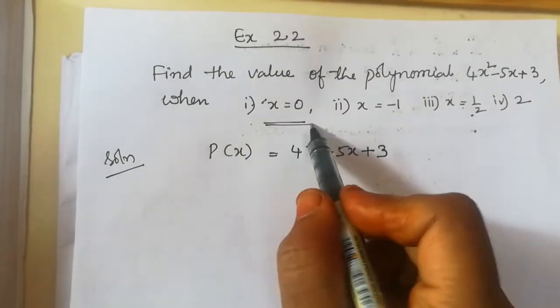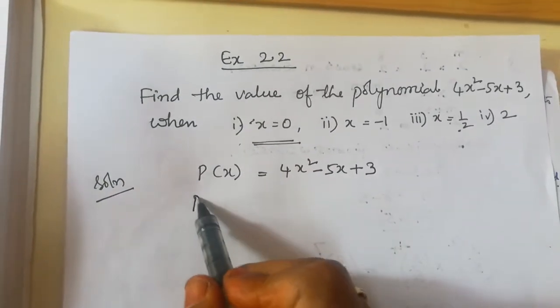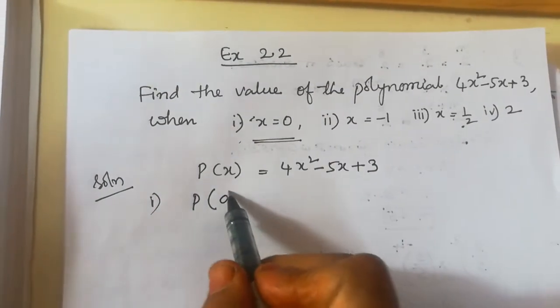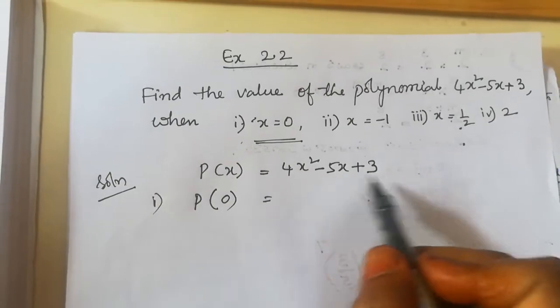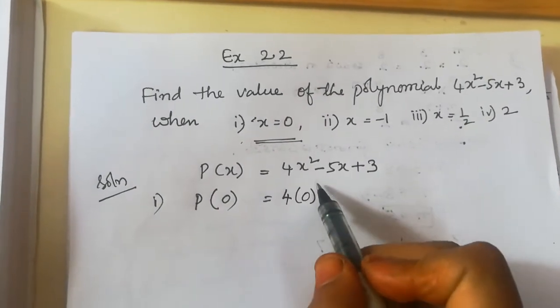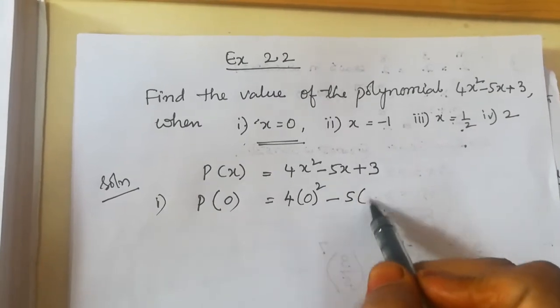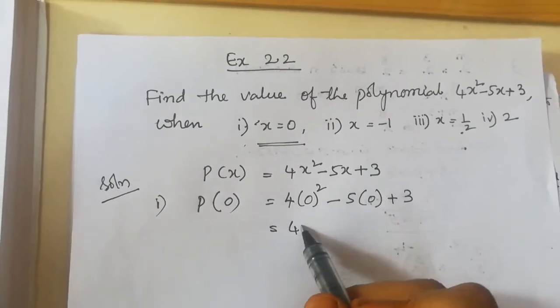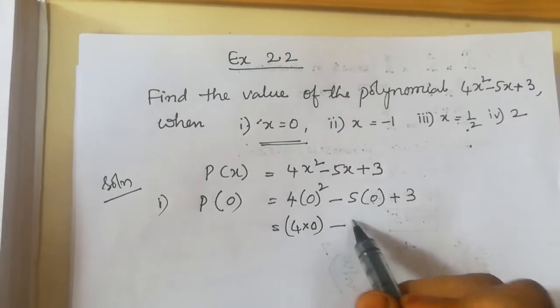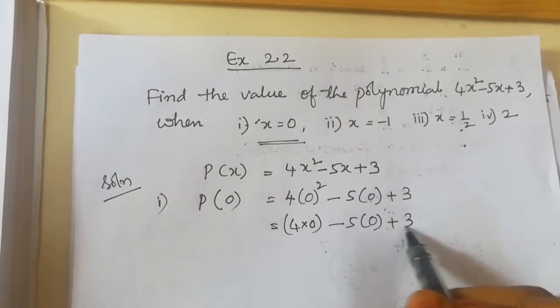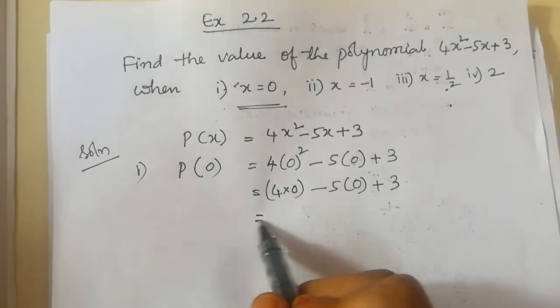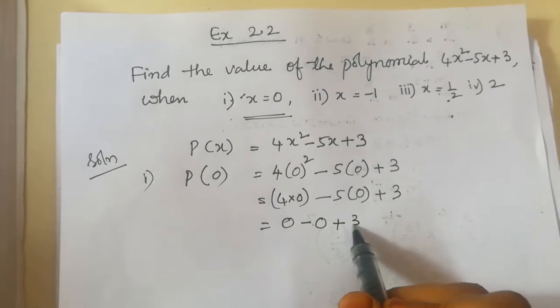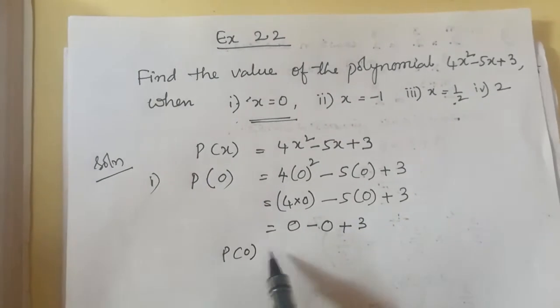We have to find the value when x equals 0. We replace x by 0 wherever it appears. Substituting 0: 4 times 0 squared minus 5 times 0 plus 3. Since 0 squared is 0 and 5 times 0 is 0, we get 0 minus 0 plus 3. So the value of P(0) equals 3.